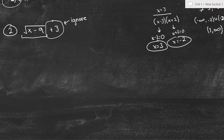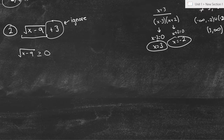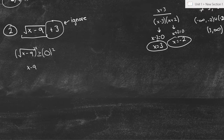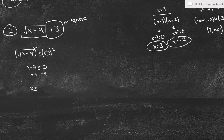Anything under a radical has to be greater than or equal to zero because it can't be negative. So we set x minus 9 is greater than or equal to zero. Squaring both sides leaves us with x minus 9 is greater than or equal to zero. Adding 9 to both sides: x is greater than or equal to 9. That means our domain is x is greater than or equal to 9.